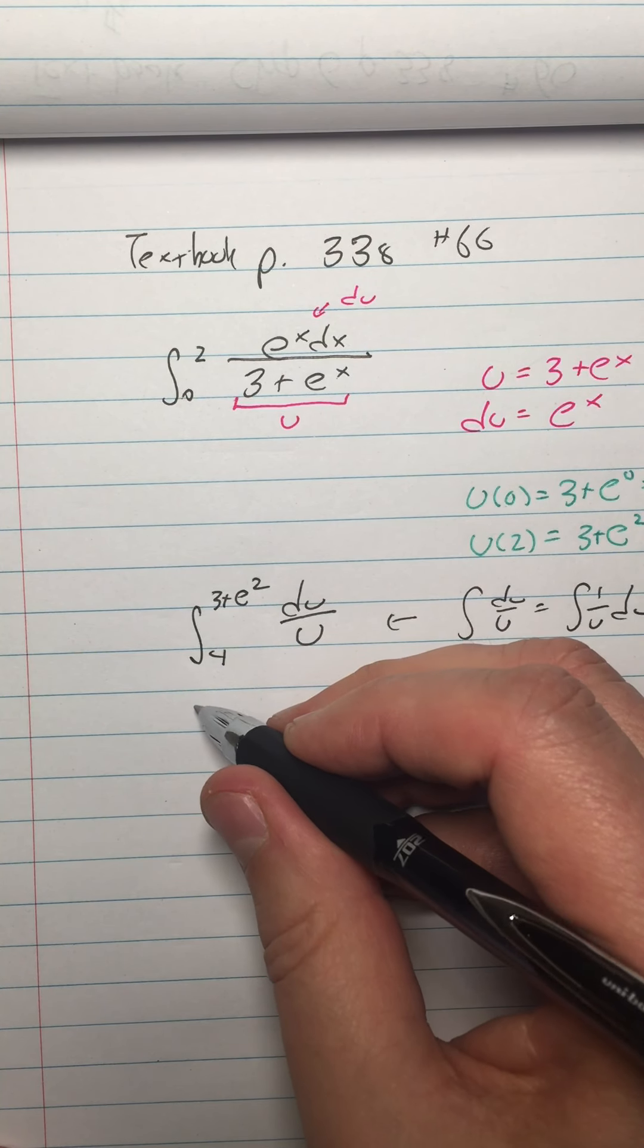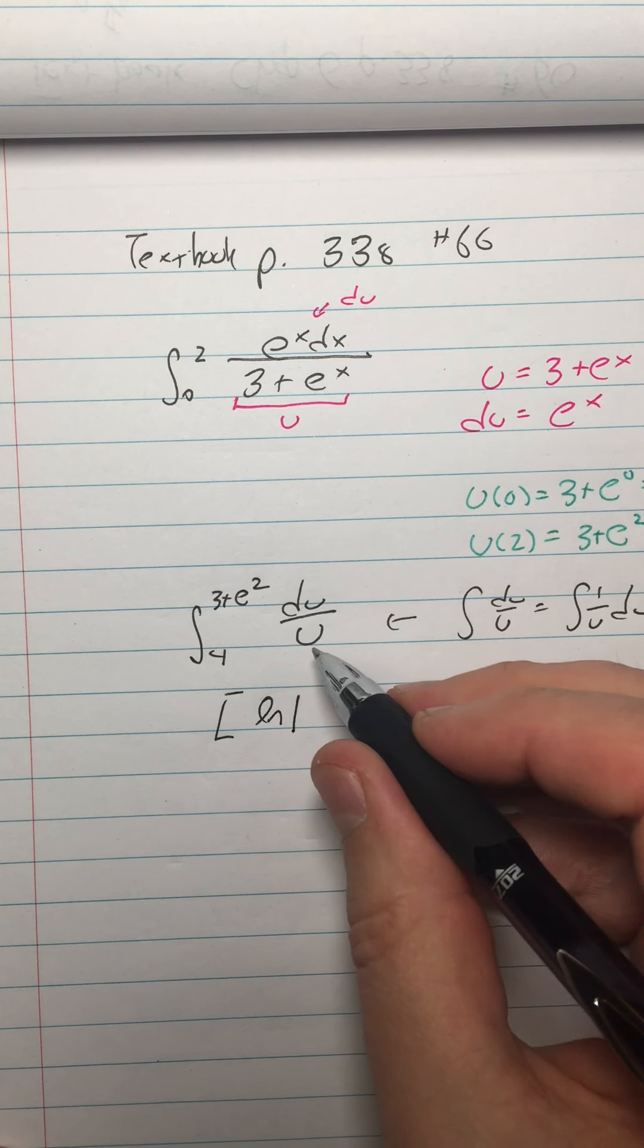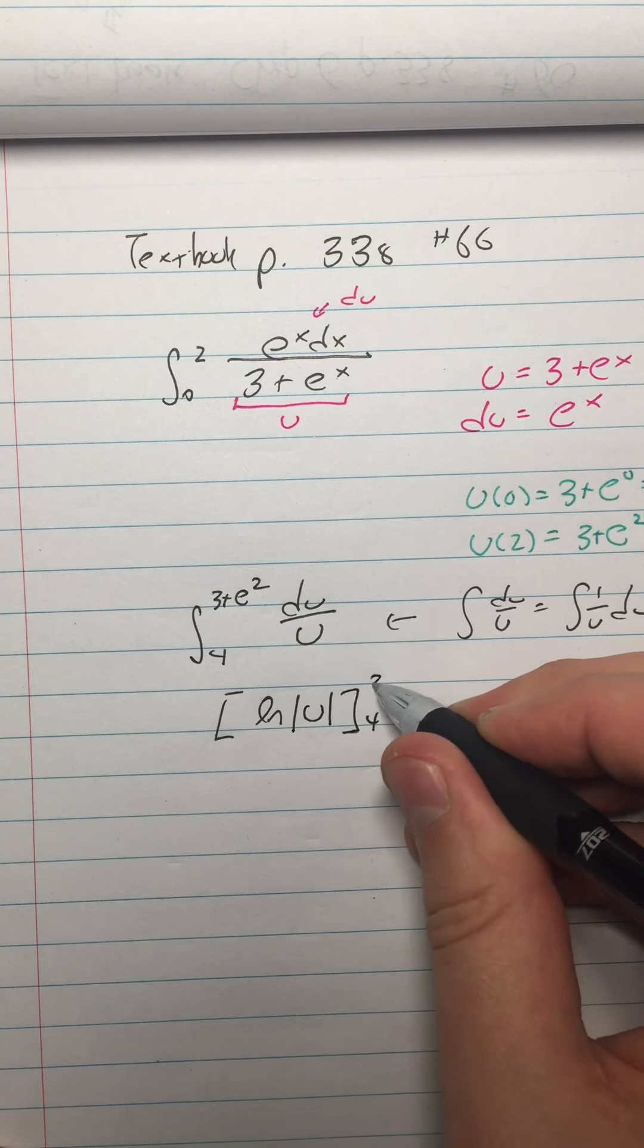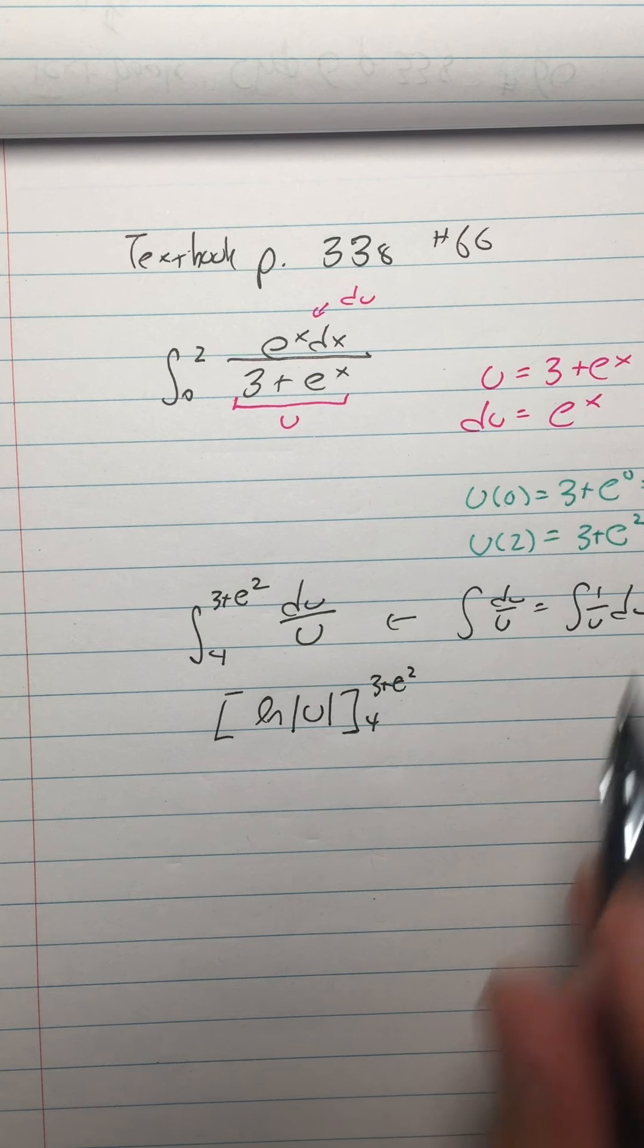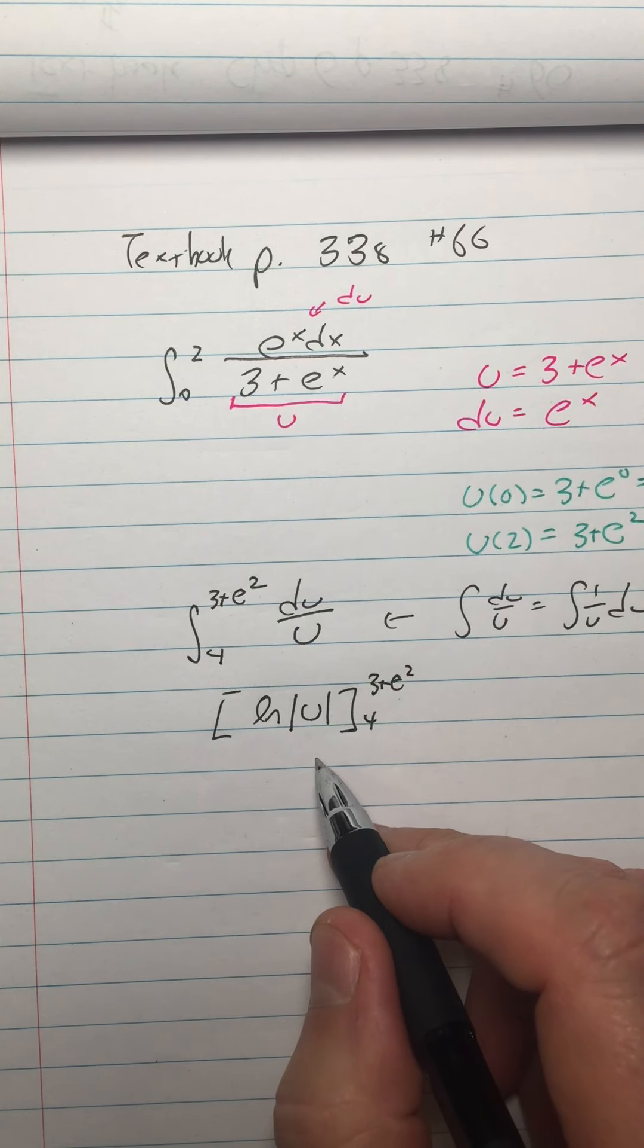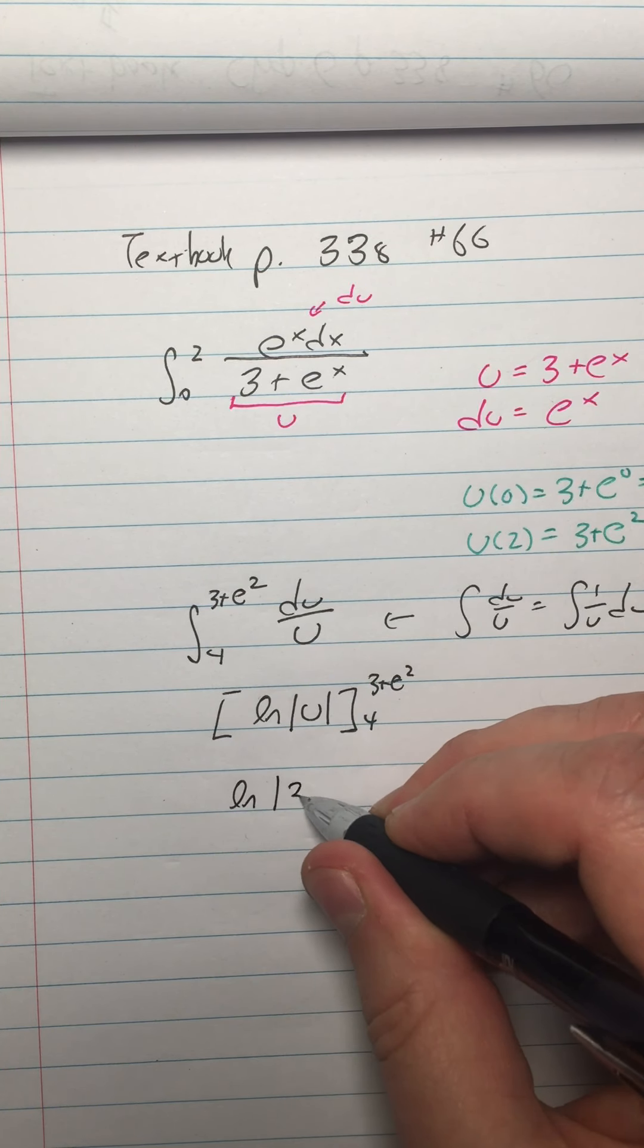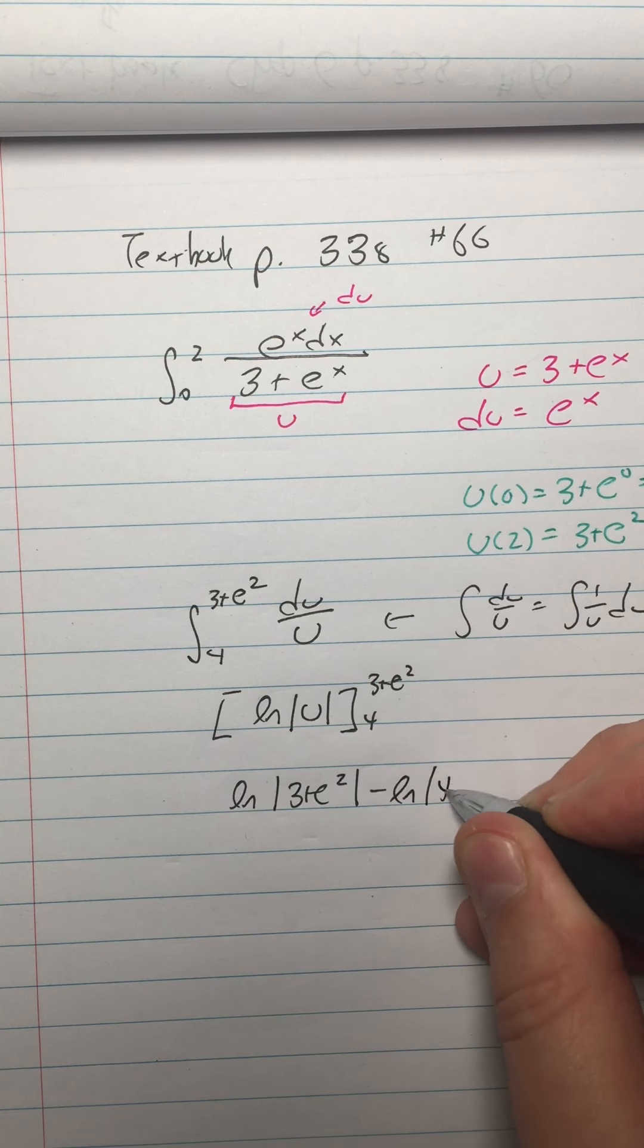All right, so then I have the ln of the absolute value of u from 4 to 3 plus e squared. Now because I changed the limits, I don't put the u back in. And I just say this is equal to ln of the absolute value of 3 plus e squared minus ln of the absolute value of 4.